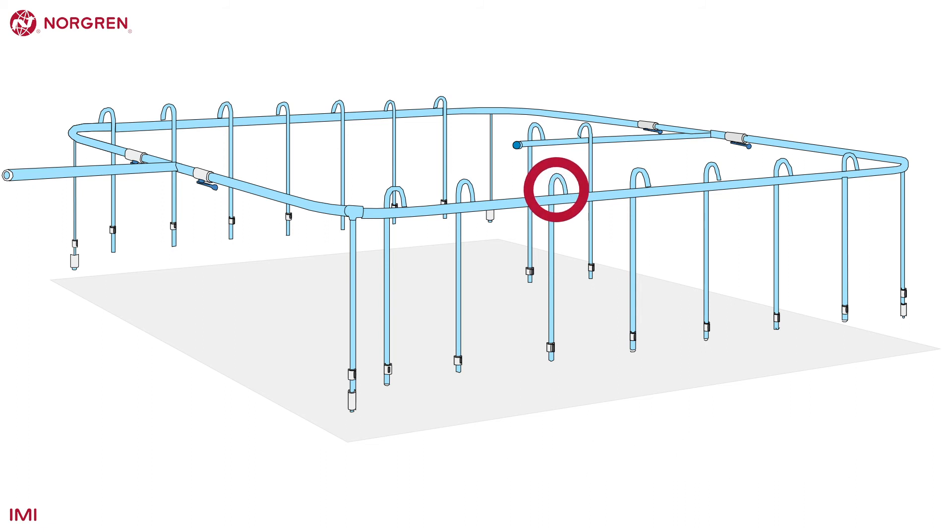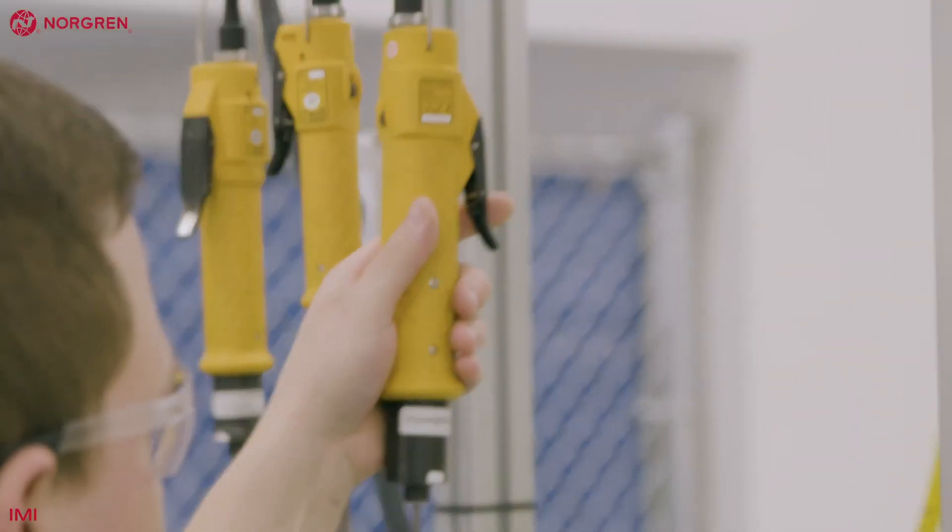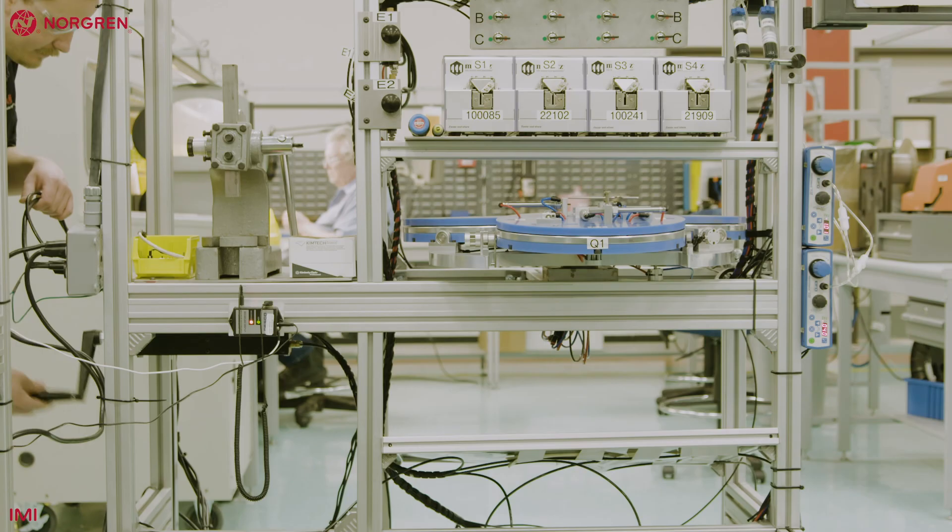The take-off points are where air is taken from the ring main to a point of use, typically a pneumatic tool, machine or bench.